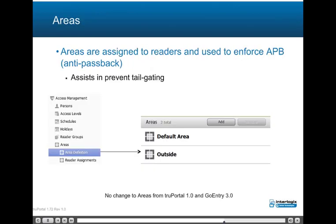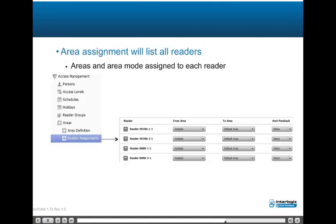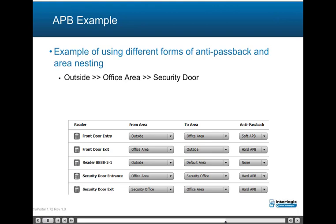Areas are assigned to readers and used to enforce APB (anti-passback) to assist and prevent tailgating. Areas are first configured by naming the area and setting anti-passback auto reset to never reset, or timed (10 minutes to 12 hours). The areas will be assigned to readers with settings for 'to area', 'from area', and anti-passback mode: none, soft, or hard. Area assignment will list all readers, and areas and area mode assigned to each reader, with an example of using different forms of anti-passback and area nesting such as an outside office area security door.